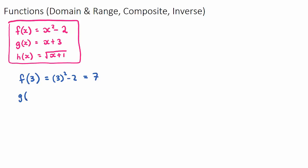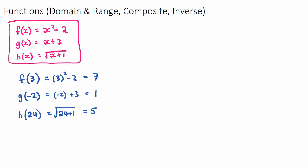For g(-2), find the g(x) function and replace x with -2: -2 + 3 = 1, so the output is 1. For h(24), substitute 24 into the h(x) function: √(24 + 1) = √25 = 5. So that's what we do to find f, g, or h of a number — just find that function and substitute in.